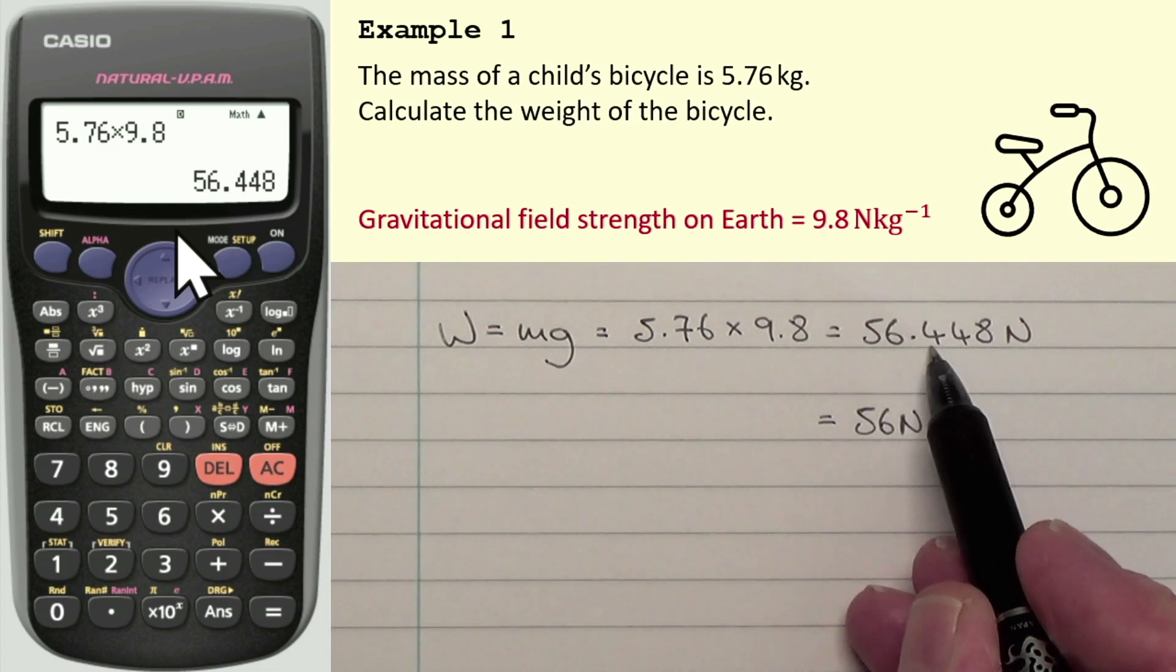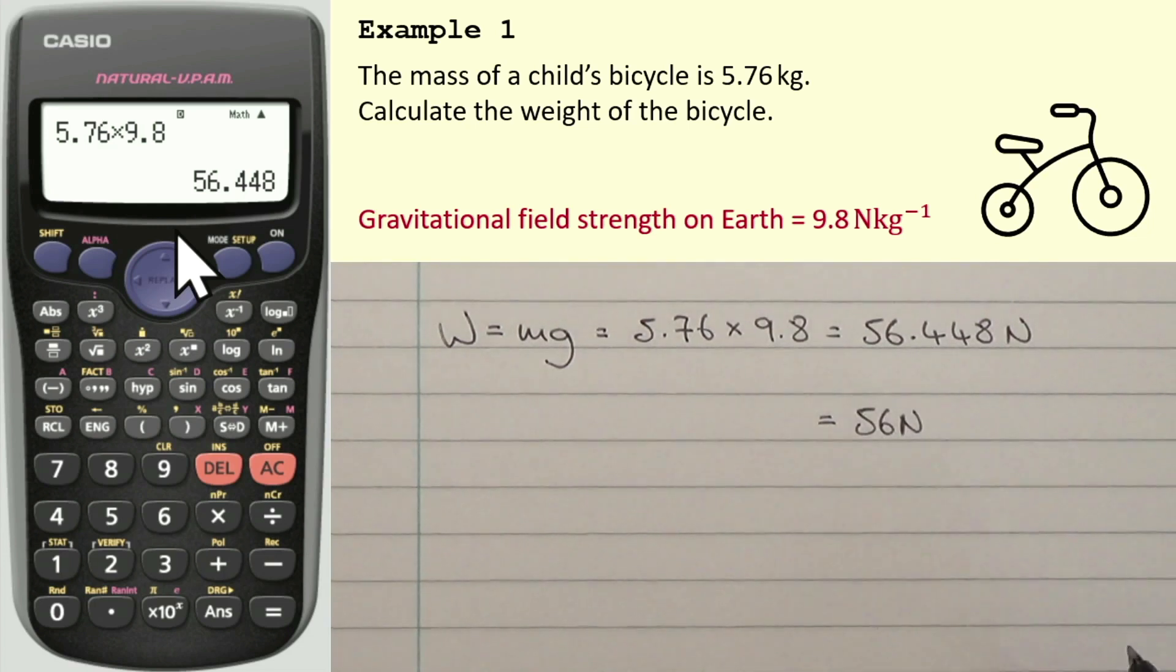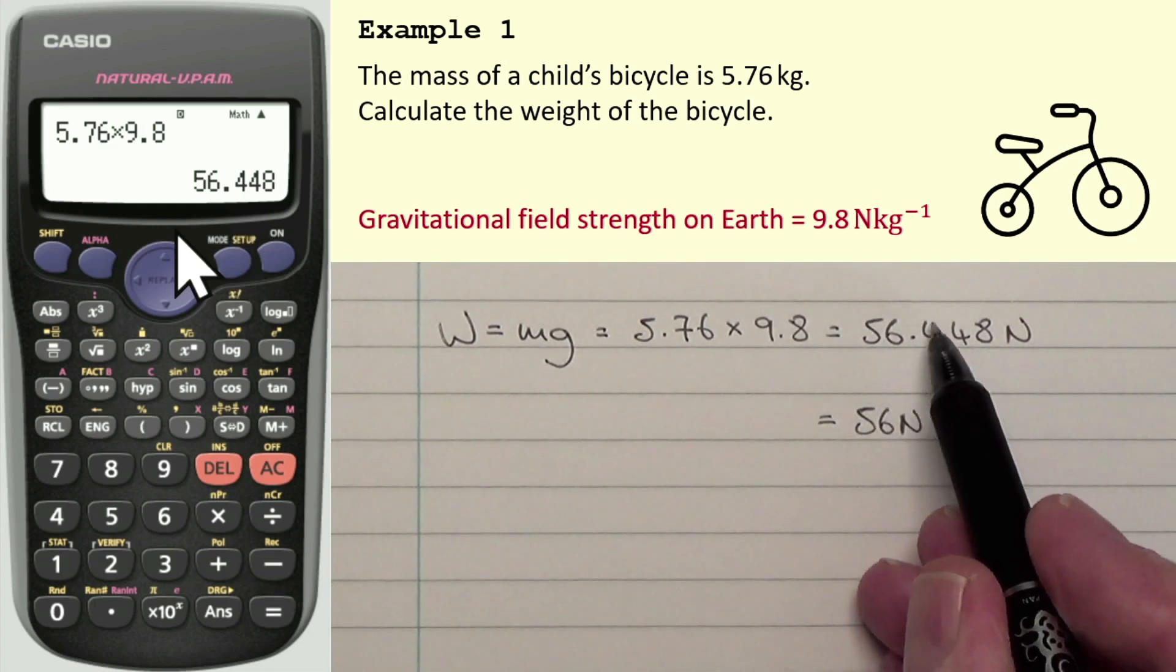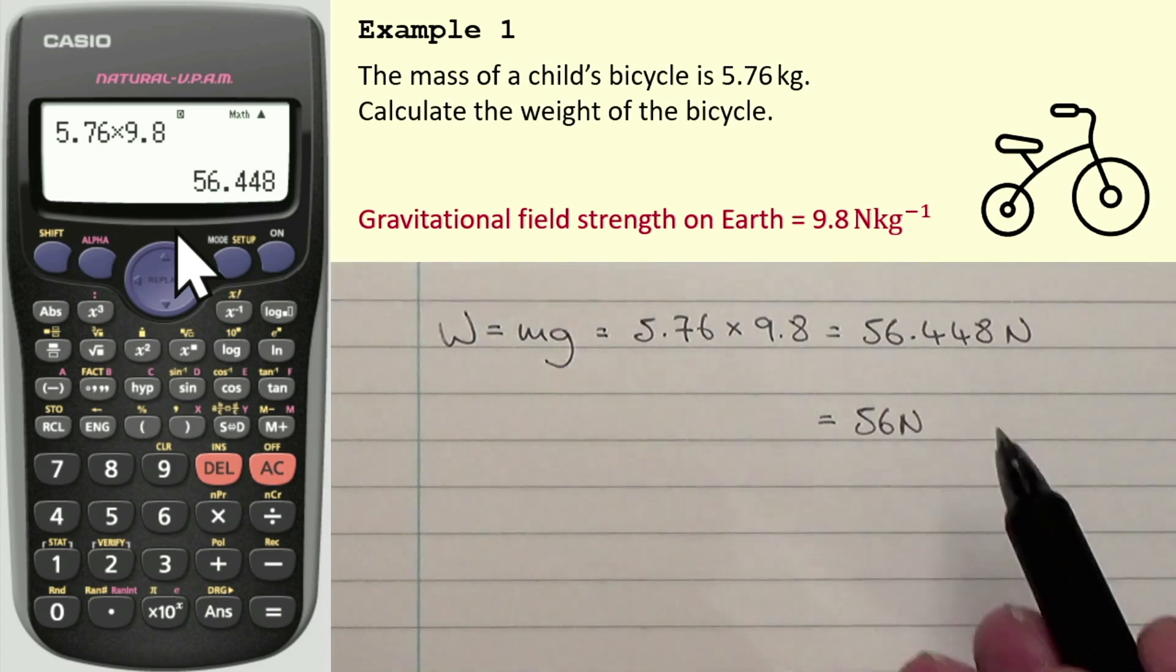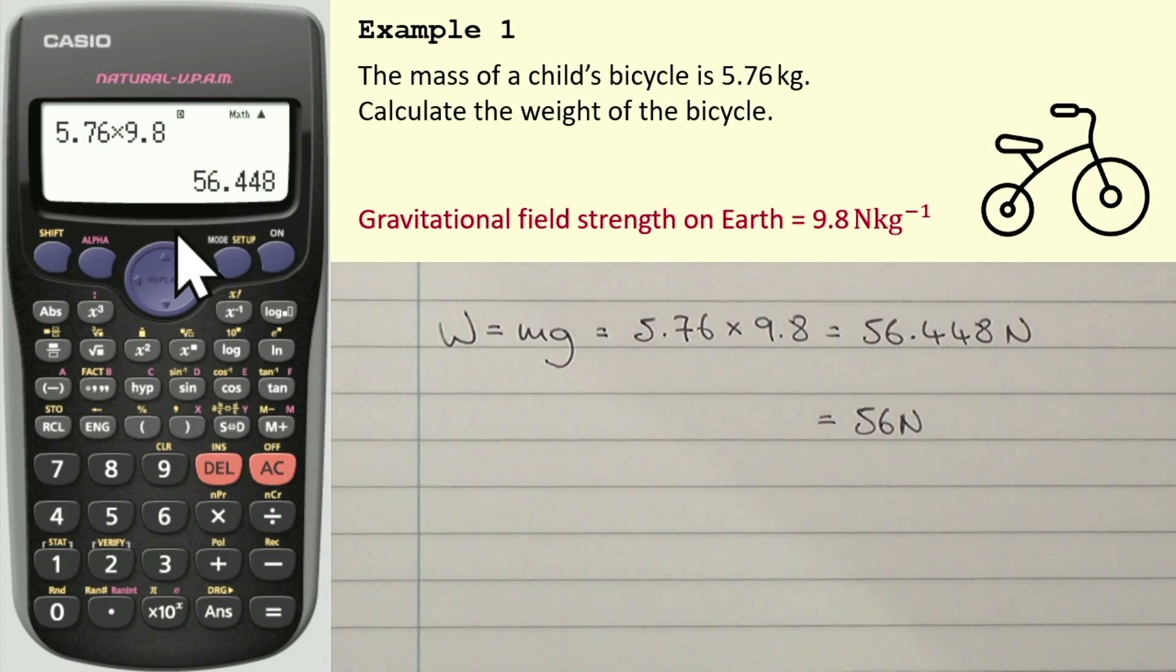If that was 56.5, I would need to round that up to 57. Or any value 5 or above, as I said, I would need to round that up. So there you go. That's the first rule.